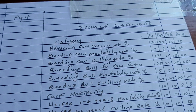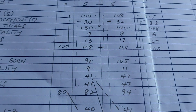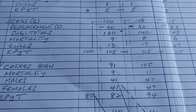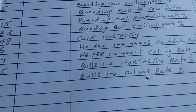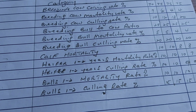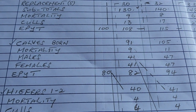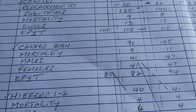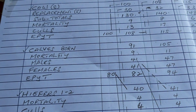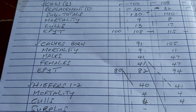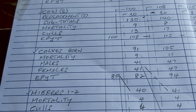From the 130 cows, calves are produced at a breeding cow calving rate of 70% in year one. So 70% of 130 gives us 91 calves. The calf mortality rate is 10%, so 10% of 91 means 9 will die. The remaining 82 are split evenly between males and females according to Mendelian law.